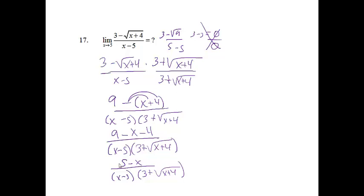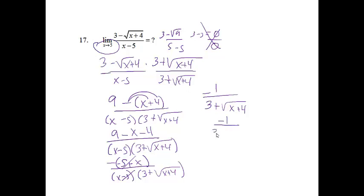I notice that if I factor out a negative from the numerator, then I can cancel the x minus 5 terms. So rewriting, it's just negative 1 over 3 plus the square root of x plus 4. Now I can plug in 5, and I end up getting negative 1 over 3 plus 3, so my answer will be negative one sixth.